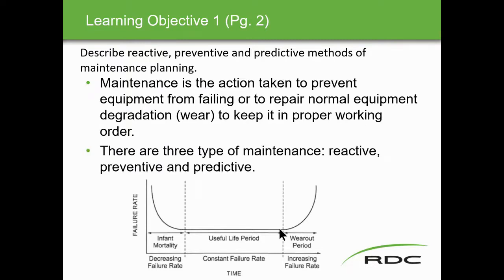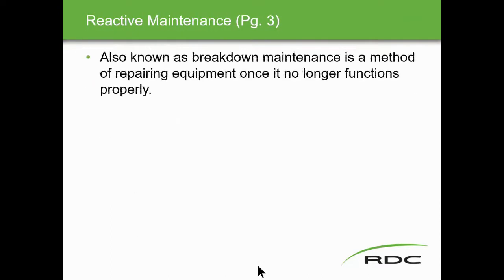Three different types of maintenance: reactive, preventive, and predictive. When I do maintenance at home, it's usually reactive — something has to happen first before I'll do any maintenance. If I'm looking at my vehicle, brakes and all that kind of stuff, it's still reactive. When our shocks go or muffler goes, that's always reactive. We don't replace things that don't need to be replaced, and it's the same with companies. Reactive maintenance, also known as breakdown maintenance, is a method of repairing equipment once it no longer functions properly. This could be catastrophic — a lot of companies just do reactive maintenance; when something breaks down, then they go fix it.